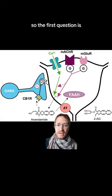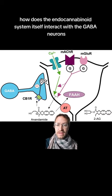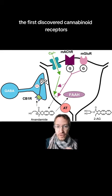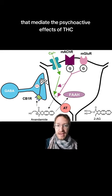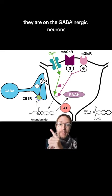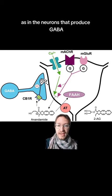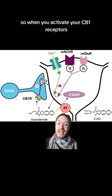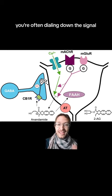So the first question is: how does the endocannabinoid system itself interact with the GABA neurons? It is a fascinating answer, because the CB1 receptors — the first discovered cannabinoid receptors that mediate the psychoactive effects of THC and are so widespread in your brain — do you know where the most CB1 receptors are? They are on the GABAergic neurons, the neurons that produce GABA. That's where the most CB1 receptors are. So when you're activating your CB1 receptors, you're often dialing down the signal.